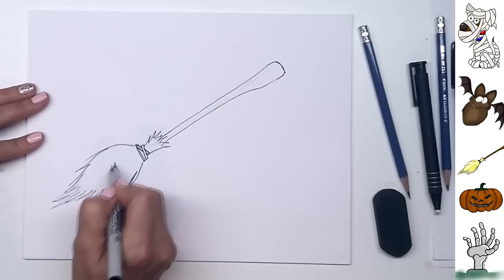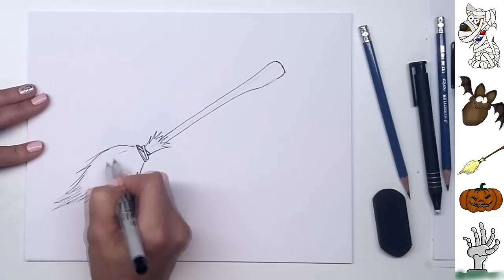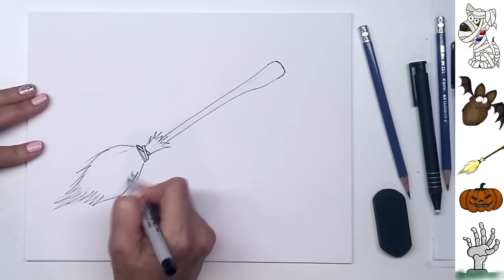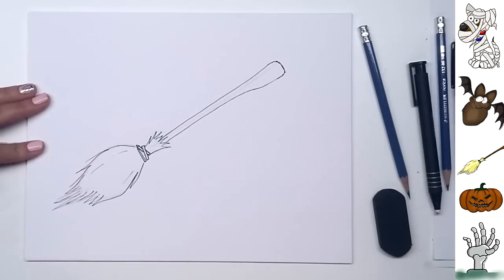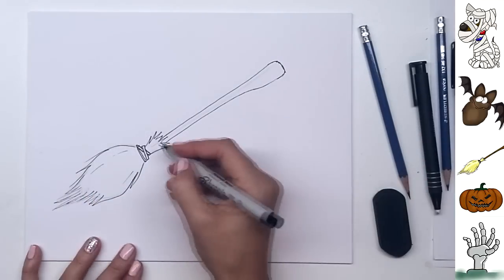Now if you like, you can also add a few more texture lines through this part of the broom. Just to show the idea of some hay in there.